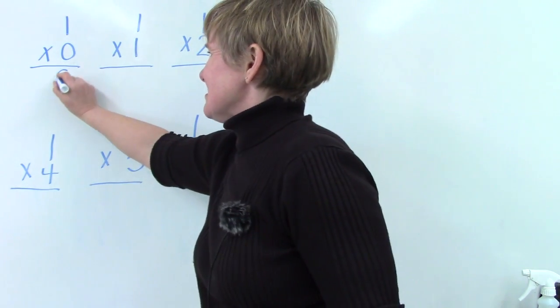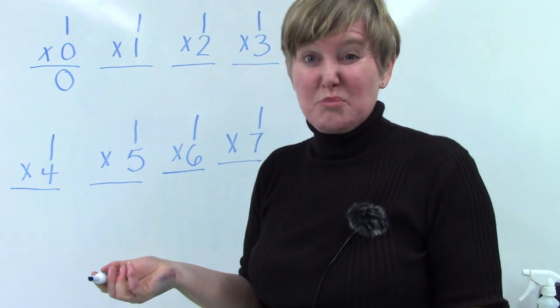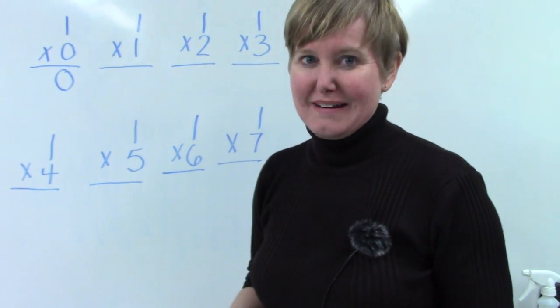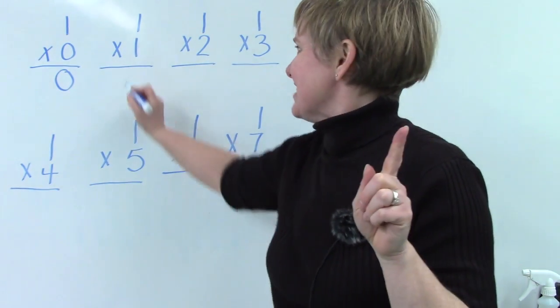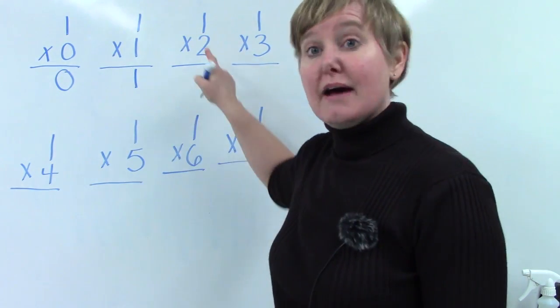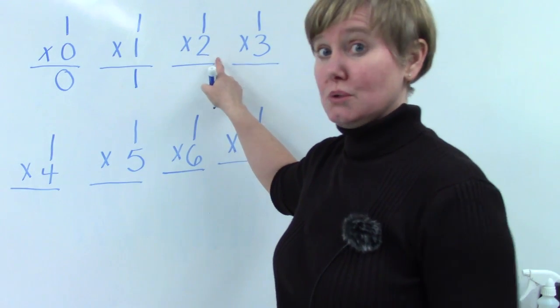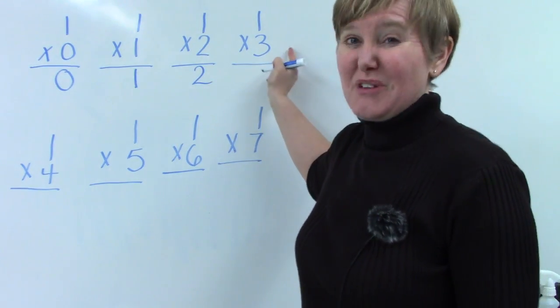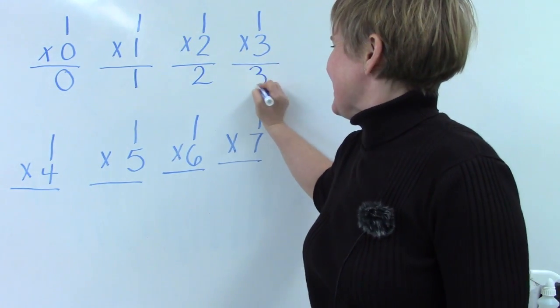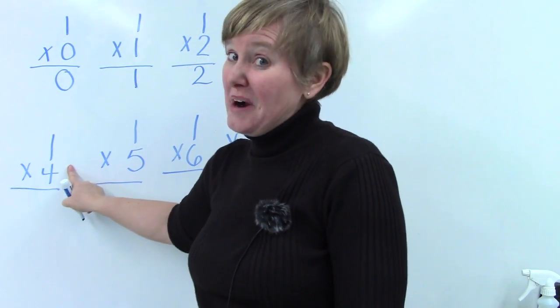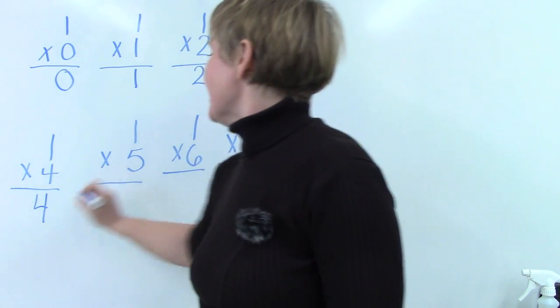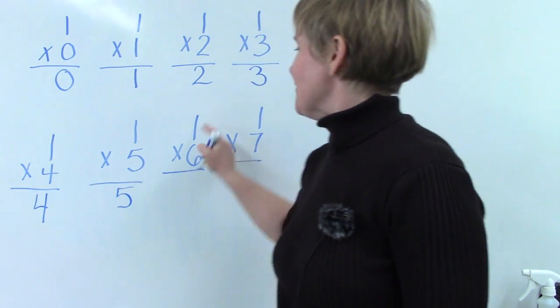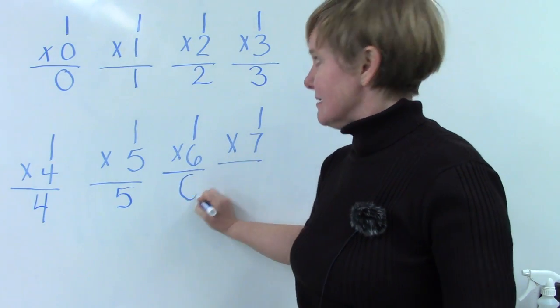We have zero because we had a group of nothing. If we have one group of one, then our answer is one. If we have one group of two, we have two. If we have one group of three, that's three. One group of four is four. One group of five is five. One group of six is six.